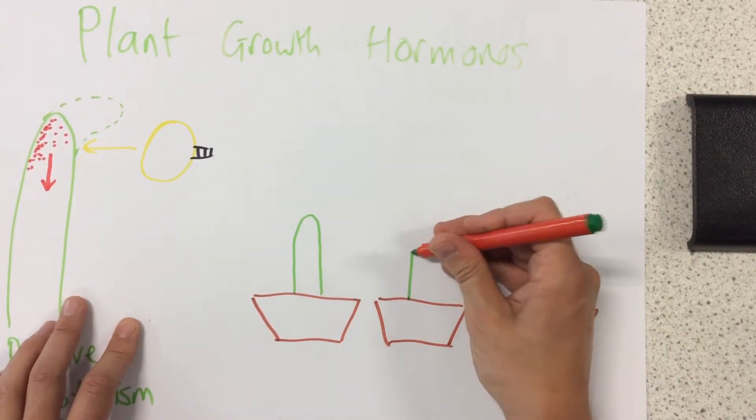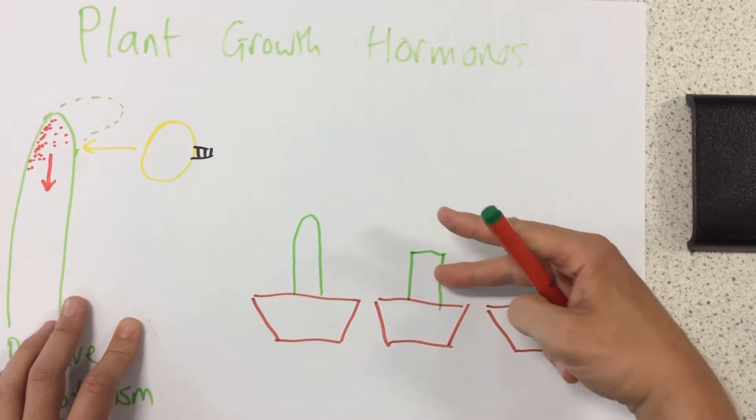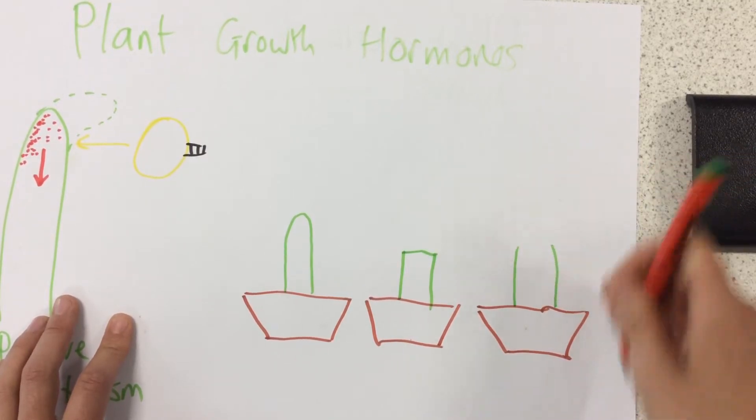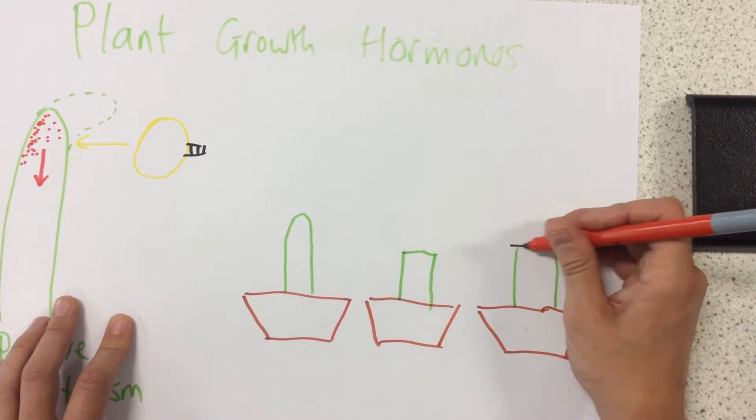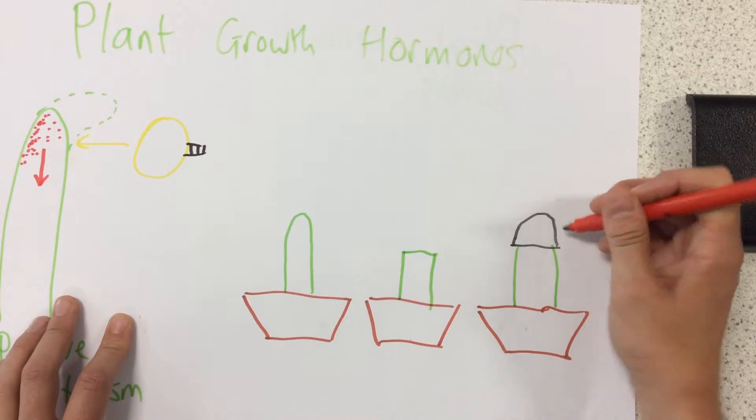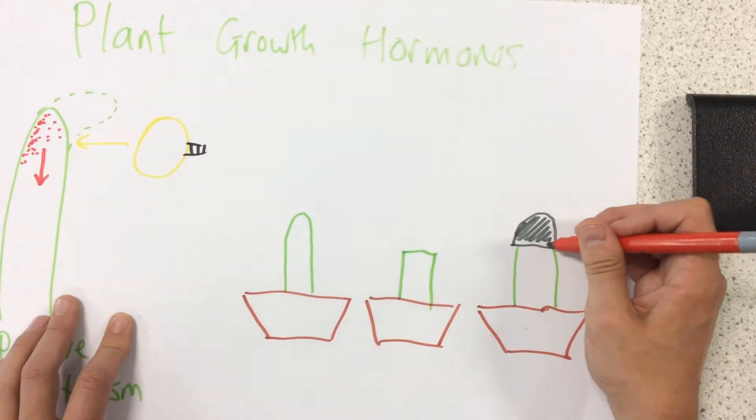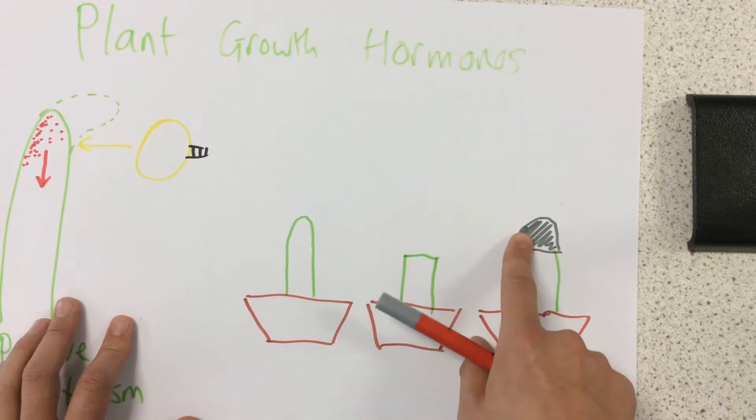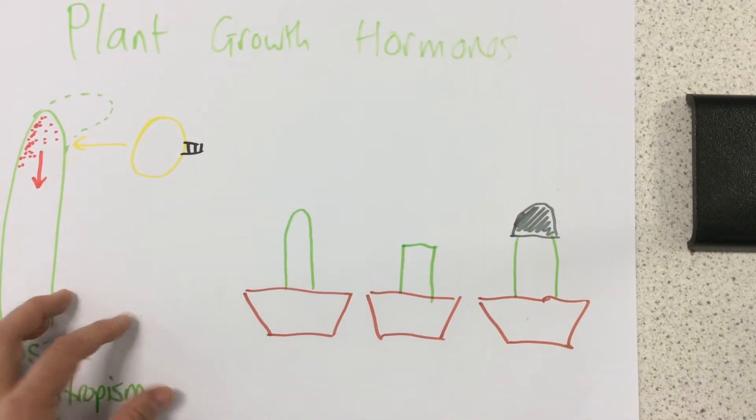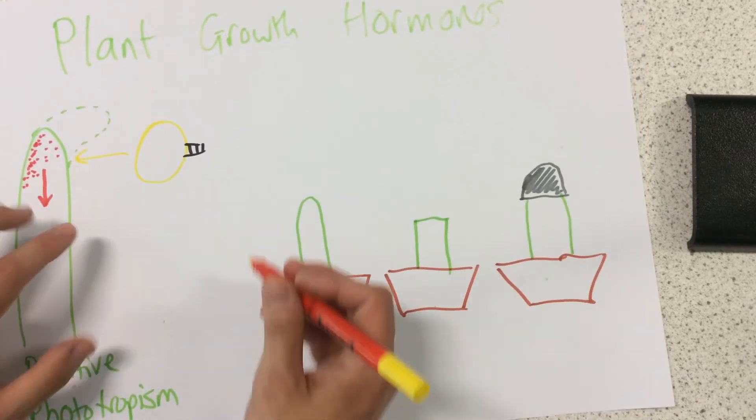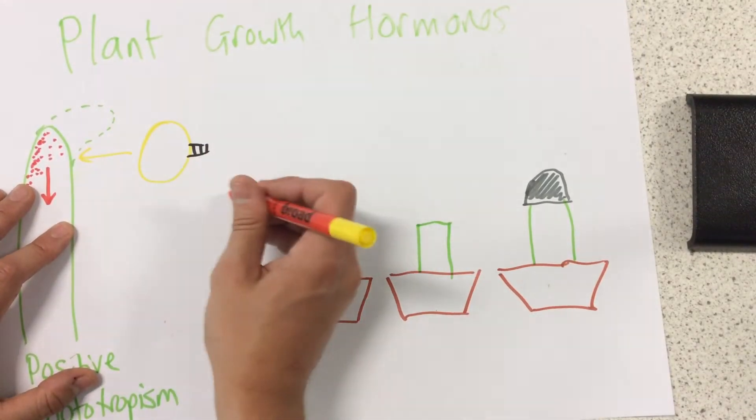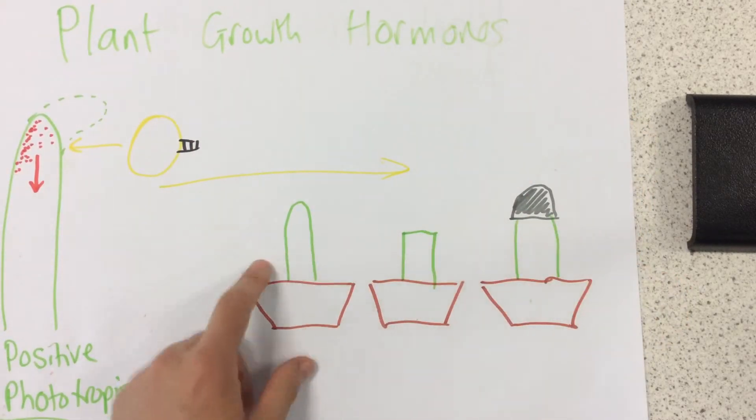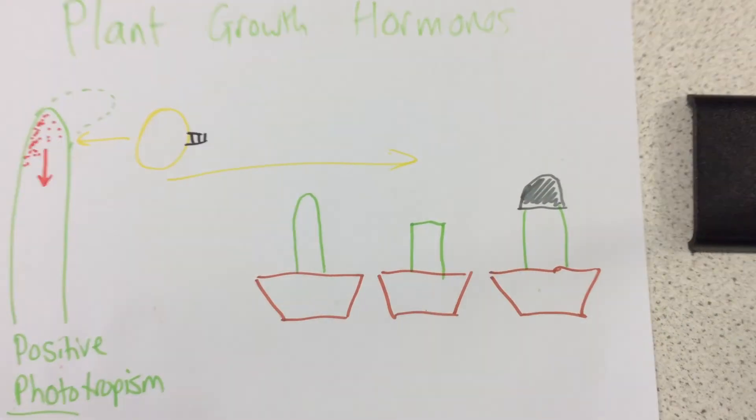This one here has had the top of the shoot cut off. Now this one here, it hasn't been damaged, but they've put a foil hat on it that doesn't allow any light to reach the shoot. So what they then say, they like to say, let's say this light bulb now is shining this way, so the light is coming that way within our experiment. What would happen to each of these and why?